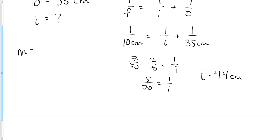Real quickly, the magnification of it. Negative i over o, negative 14 divided by the object 35. 14 over 35, 0.4. So 0.4 magnified, that means smaller. Magnification of 1 would be the same size. This is also a positive value. Actually, sorry, that's negative.